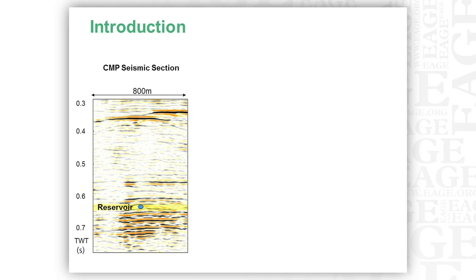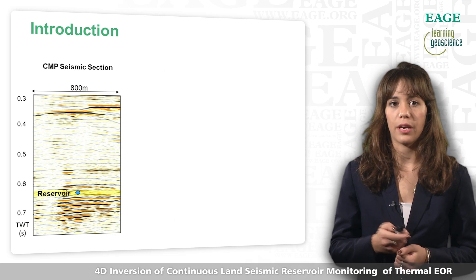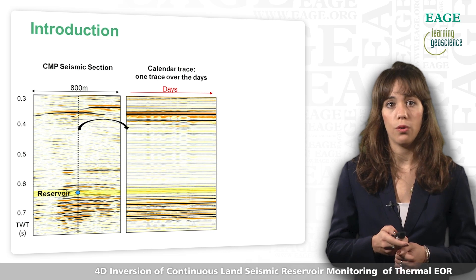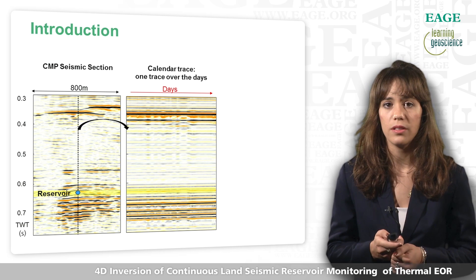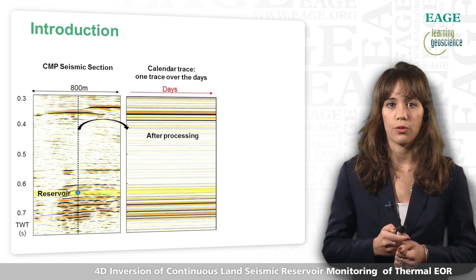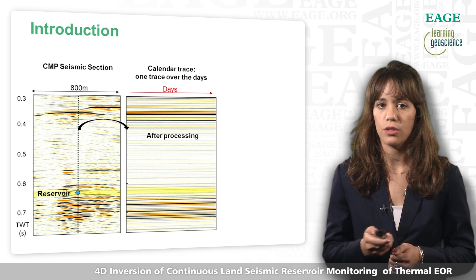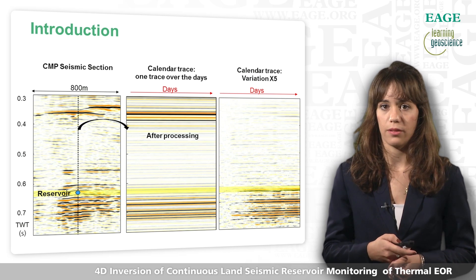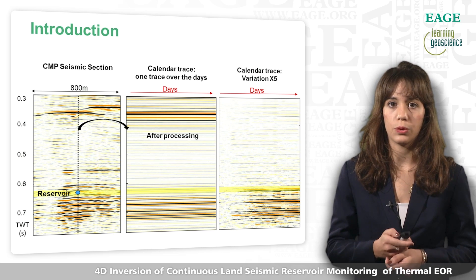Here is a typical CMP section. The reservoir is around 0.6 seconds and the blue point represents the horizontal steam injector. To visualize the calendar dimension of this continuous seismic monitoring, let's look at one trace at the vertical of the injector over the days. On this calendar trace, you see that some reflectivity varies while other parts are constant. After processing, more or less everything looks constant. But if you remove the first trace from all days to look at the variation, you see some clear 4D variation in the reservoir and below the reservoir.